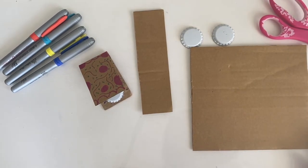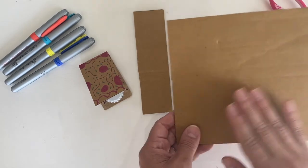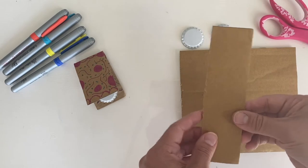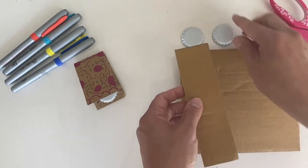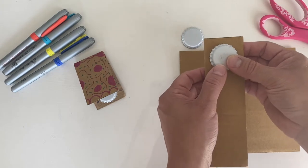Once you have all your materials selected, you are going to be starting with some cardboard. Take your cardboard and cut a strip. Any length will do, but you want it to be the width that fits a bottle cap.